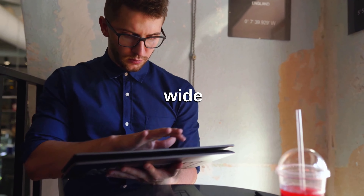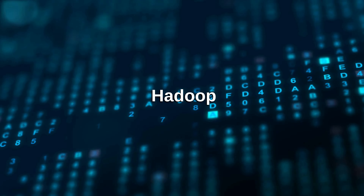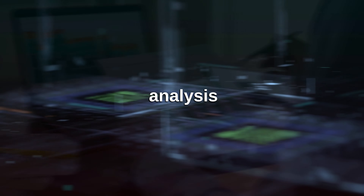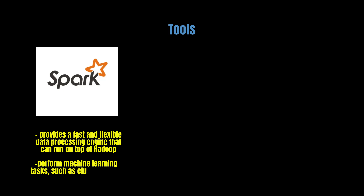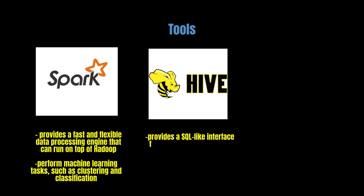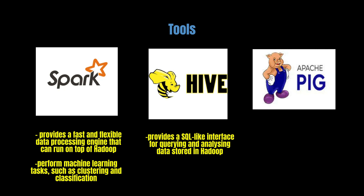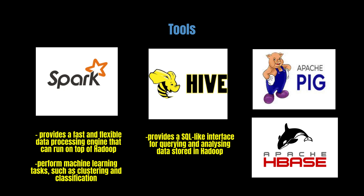The ecosystem consists of a wide range of tools and frameworks that can be used in conjunction with Hadoop to perform various data processing and analysis tasks. One popular tool is Apache Spark, which provides a fast and flexible data processing engine that can run on top of Hadoop. Spark can be used to perform machine learning tasks such as clustering and classification, and is often used with popular machine learning libraries such as TensorFlow and Keras. Another tool commonly used in the Hadoop ecosystem is Hive, which provides a SQL-like interface for querying and analyzing data stored in Hadoop. Other tools and frameworks include Pig, which provides a high-level language for data analysis, and HBase, a NoSQL database that can be used to store and manage large volumes of unstructured data.